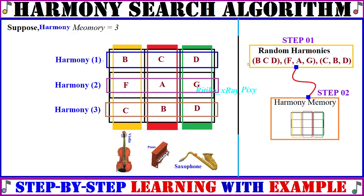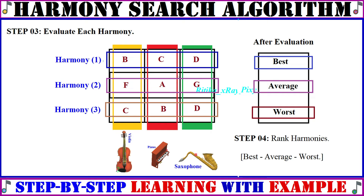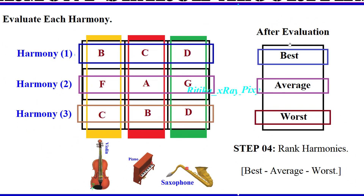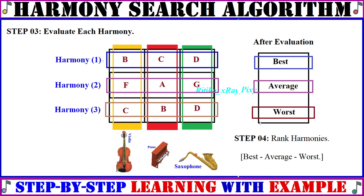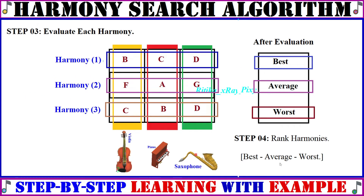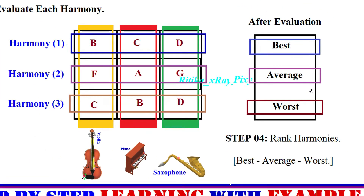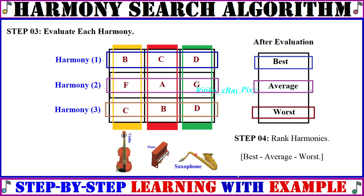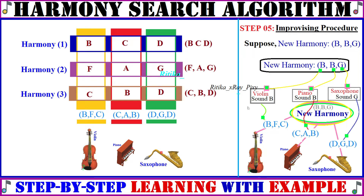In step three, we evaluate the performance for each harmony. After evaluation, suppose the first harmony is best, second harmony is average, and third harmony is the worst. In step four, we rank the harmonies from best to worst — the best harmony is placed at the top and the worst at the bottom. All harmonies are already sorted, so no action is needed here.